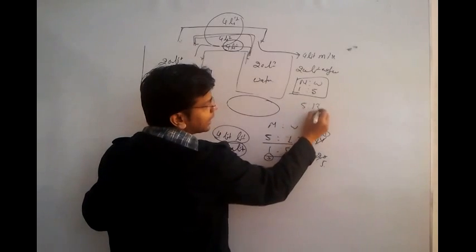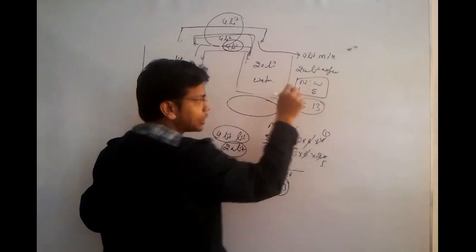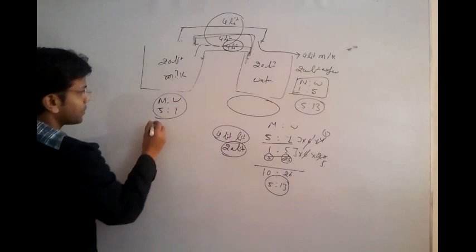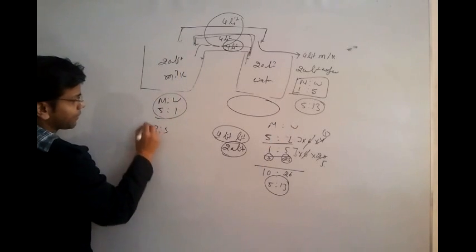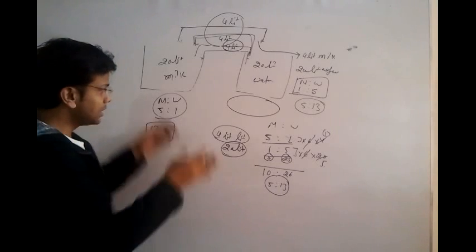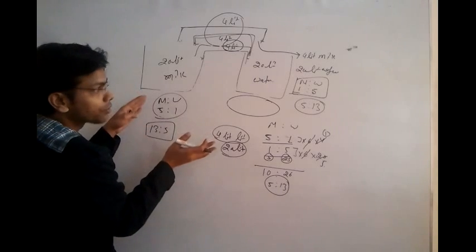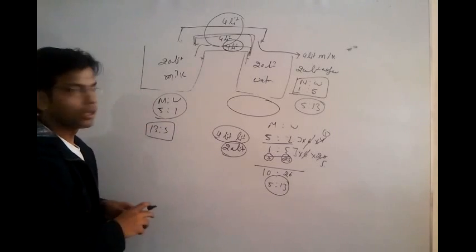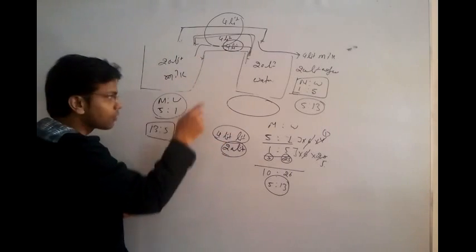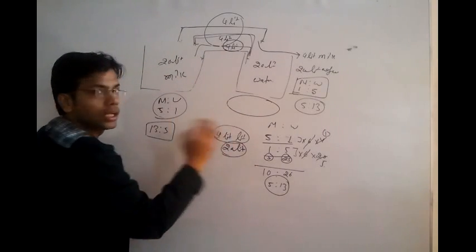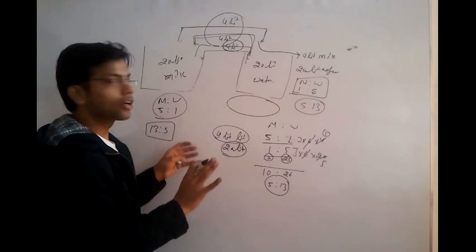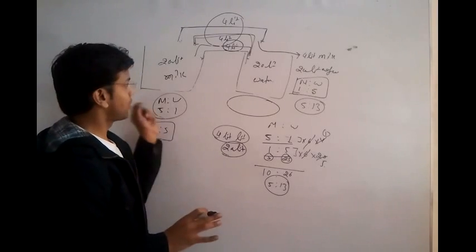We found that 5 to 13 is the ratio of milk to water in the second container, so by the reversal rule the first container will be 13 to 5 after the second process. This is the way we solve the question. Now I'm going to generate a common formula for this type of question.